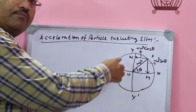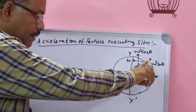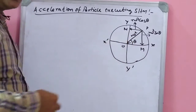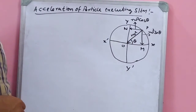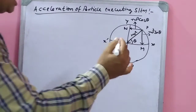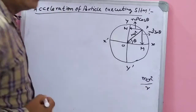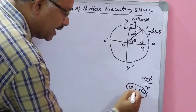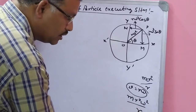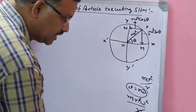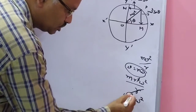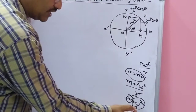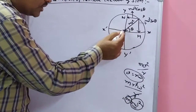We already know this diagram from the previous lectures. Here, P is the particle, and from P towards the center of the circle O, centripetal acceleration r·ω² is acting. Centripetal force is m·v²/r, and since v = r·ω, substituting gives m·r²·ω²/r. Cancelling r, we get m·r·ω², so r·ω² is the centripetal acceleration acting towards the center of the circle.